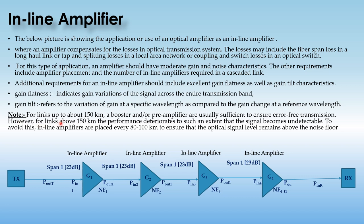For links up to about 150 km, a booster or a preamplifier are usually sufficient to ensure error-free transmission. However, for links above 150 km, the performance starts to degrade to such an extent that the signal becomes undetectable. To avoid this, inline amplifiers are placed every 80 to 100 km to ensure the TX power reaches the receiver within acceptable limits.